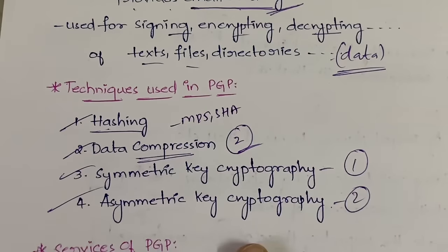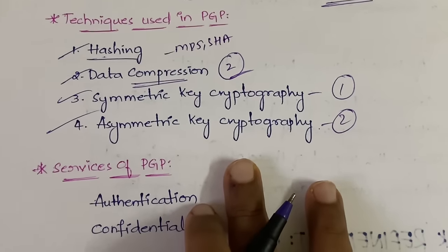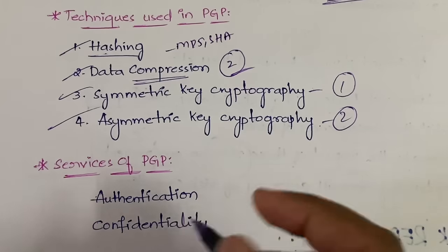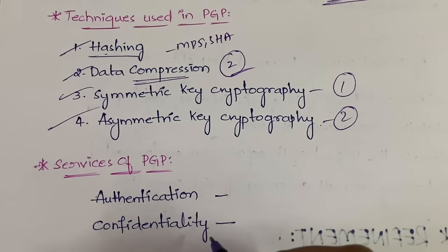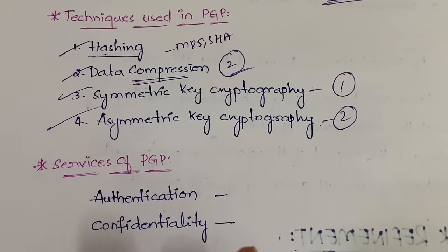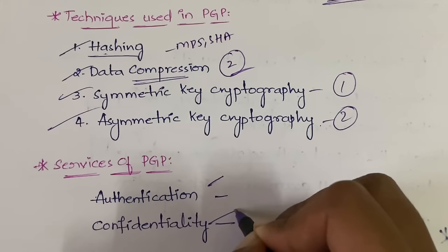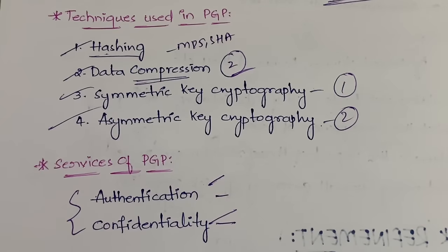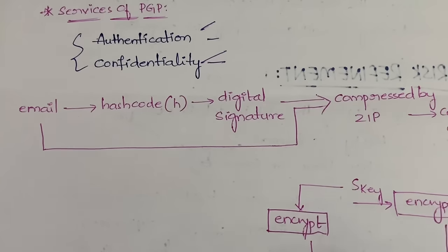Now what are the services provided by PGP? Number one is authentication and number two is confidentiality. As mentioned, we have three cases: one case for authentication, one for confidentiality, and one for both together. Before seeing the cases, let us understand in general how PGP works.